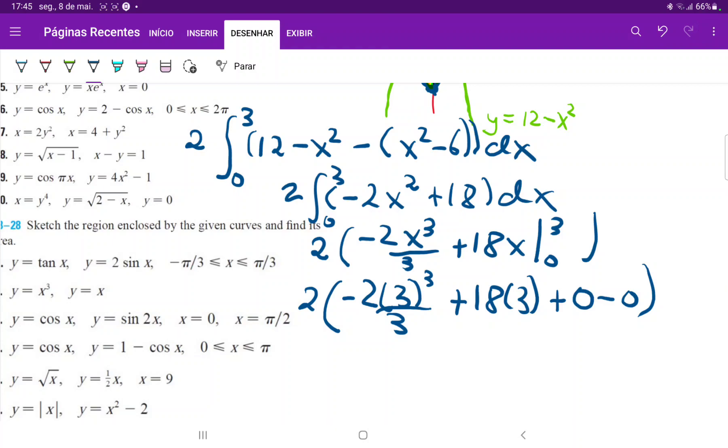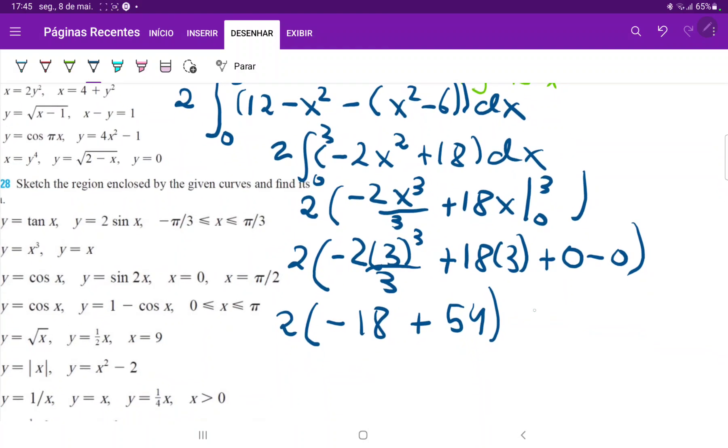So when we work this out, we do have, this is twice, minus 2 times 27 divided by 9. So this is minus 18 and then plus 18 times 3, which is 54. So when we work this out, this gives us minus 18 plus 54, which is 36 times 2 is equal to 72.